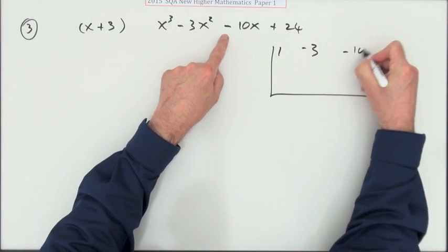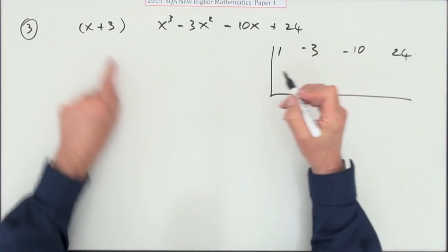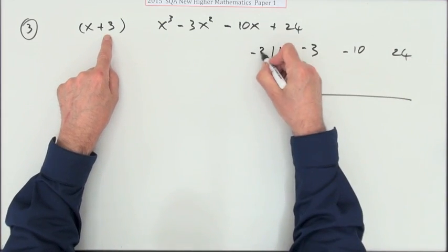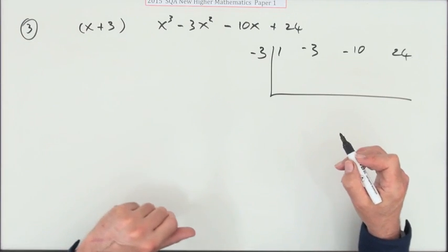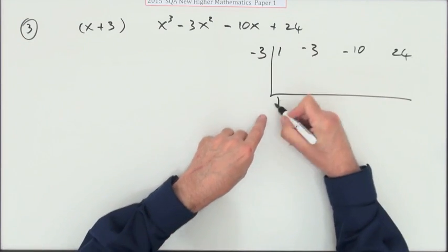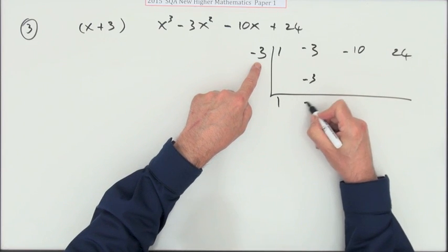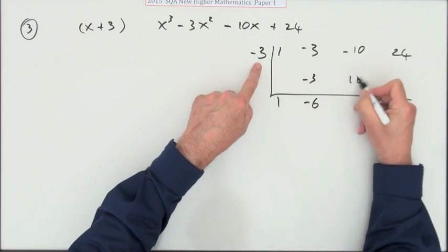None of them are missing and you'll be putting negative 3, which would be a root, into it. Feed it through: 1, multiply it up, add it down, multiply it up, there'll be a positive, add it down, multiply it up.